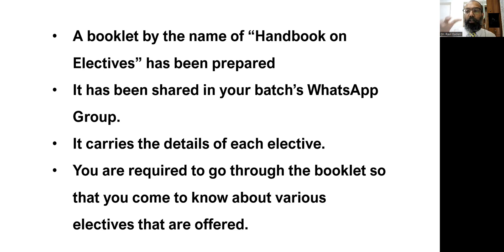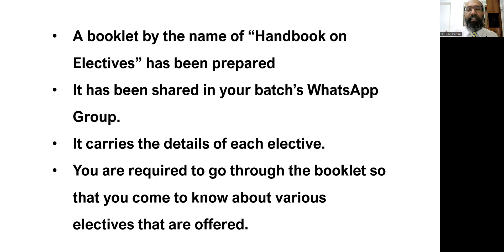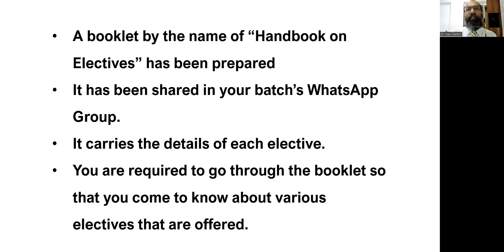In order to go with the allotment of electives — which student gets what — we have created a booklet which goes by the name of Handbook on Electives. It has already been prepared and shared in your batch's WhatsApp group. There are about 28 pre and paraclinical electives and about 43 electives in clinical branches. You will come to know about the available electives when you go through this handbook. This handbook is a PDF file shared already on your WhatsApp group.